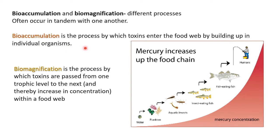Bioaccumulation is the process by which toxins enter the food web by building up in individual organisms. The term makes it easy to understand — accumulation means something is building up in a living organism. Both terms are generally used when referring to some kinds of pollutants, and each organism in a food web is getting affected.